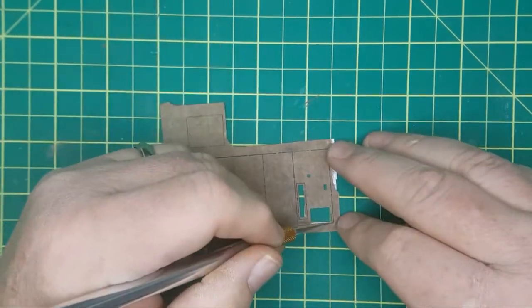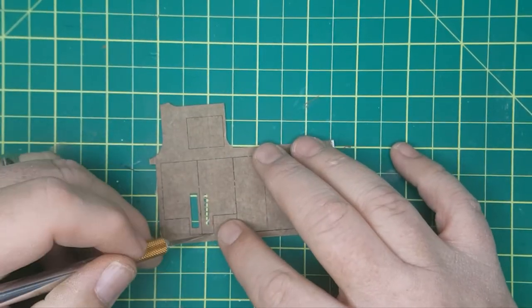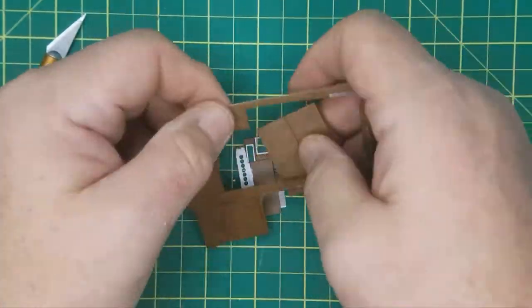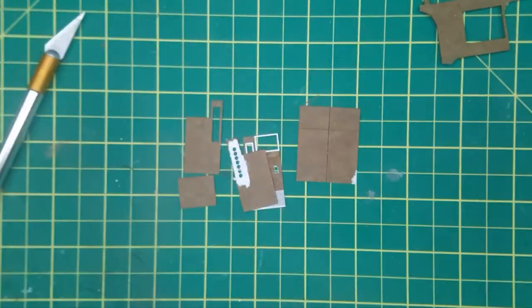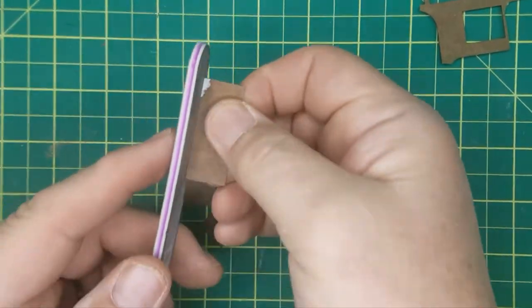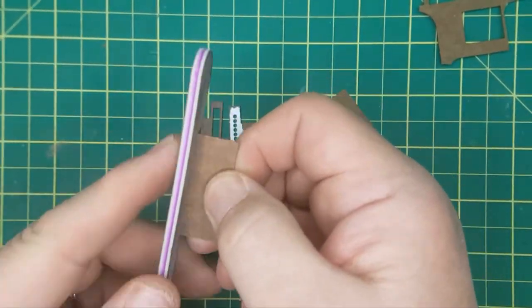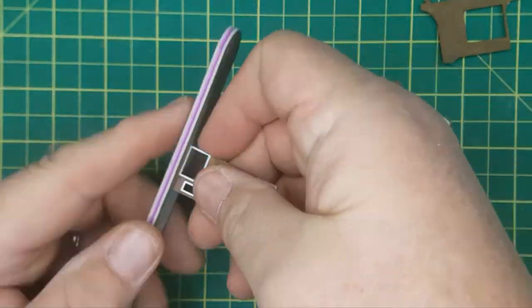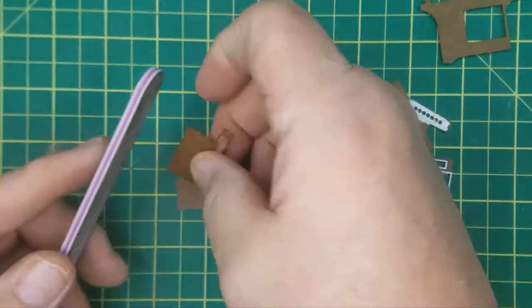Start by cutting all the parts free of the carrier sheet. Score the tabs on both sides to make them easier to remove and clean up. Sand the little attachment nubs flush with the parts edge. This will make assembly much tighter and cleaner. These double-sided nail files are very handy for this type of work and are available readily on places like Amazon.